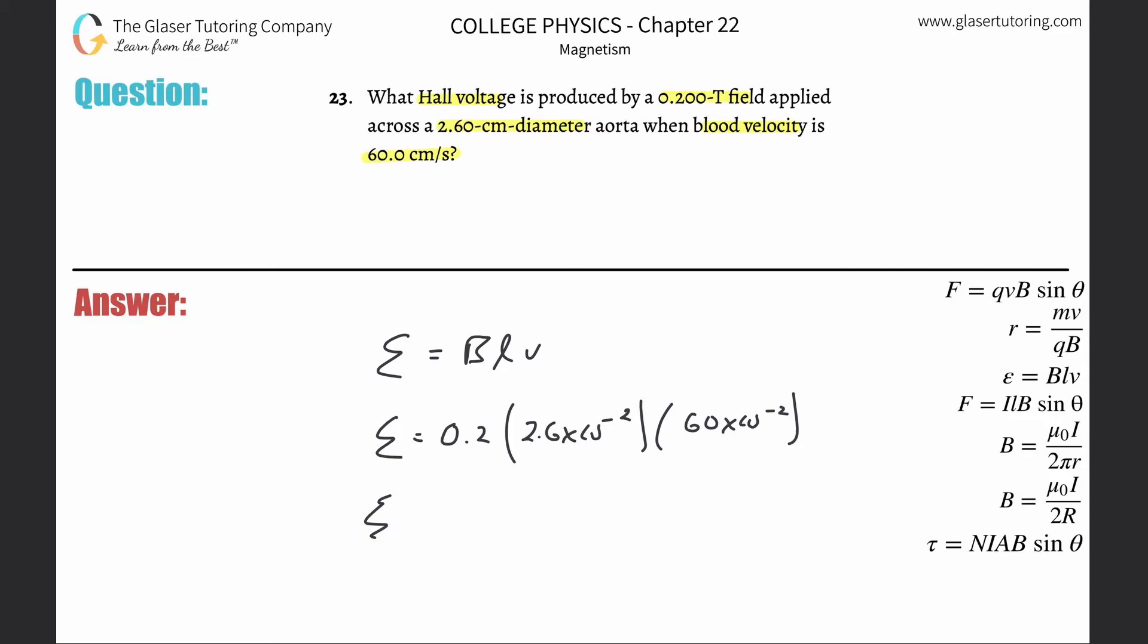So let's calculate that now. The Hall voltage here is simply going to be 0.2 times 2.6 times 10 to the minus two times 60 times 10 to the minus two. So this works out to be 3.12 times 10 to the minus three volts.